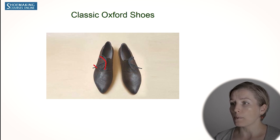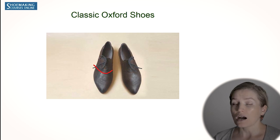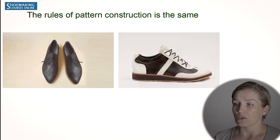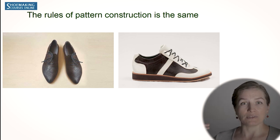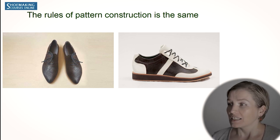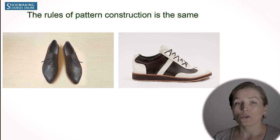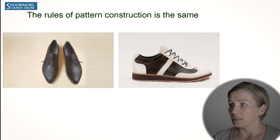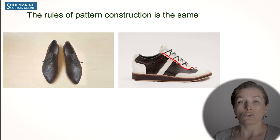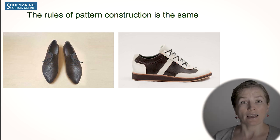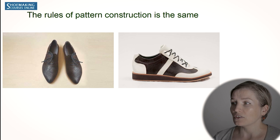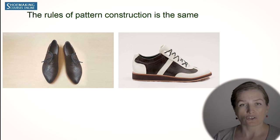The quarters are sewn to the vamp part and these quarters are closed — they don't have free opening. When we compare these classic Oxford shoes with sneakers, you probably will not see any similar details. But actually, this sneaker design is created according to the rules of construction of Oxford shoes. Because here we also have quarters with a closed construction — they don't have free opening like we have on the Oxford shoes. So to create these sneakers, we need to know the rules of construction of Oxford shoes.